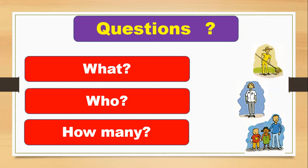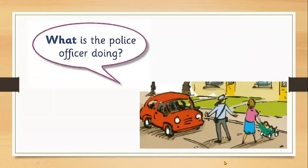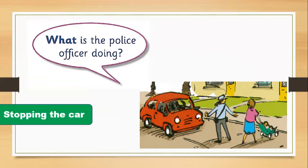And: How many kids can you see in the picture? You can use these words to ask questions — what, who, how many. For example: What is the police officer doing? She is stopping the car. Why is she stopping the car? Because the woman is crossing the road with her baby.